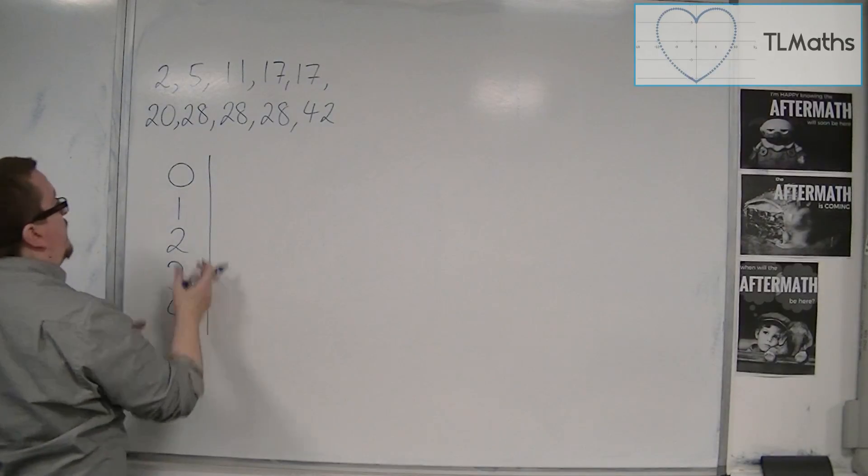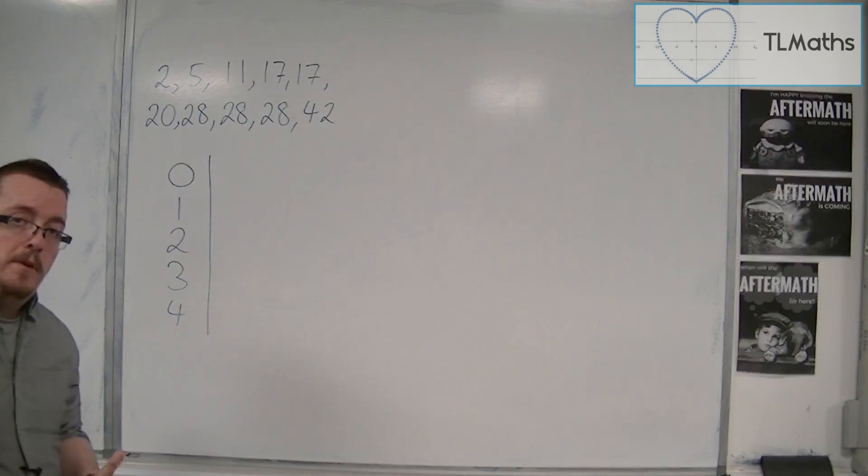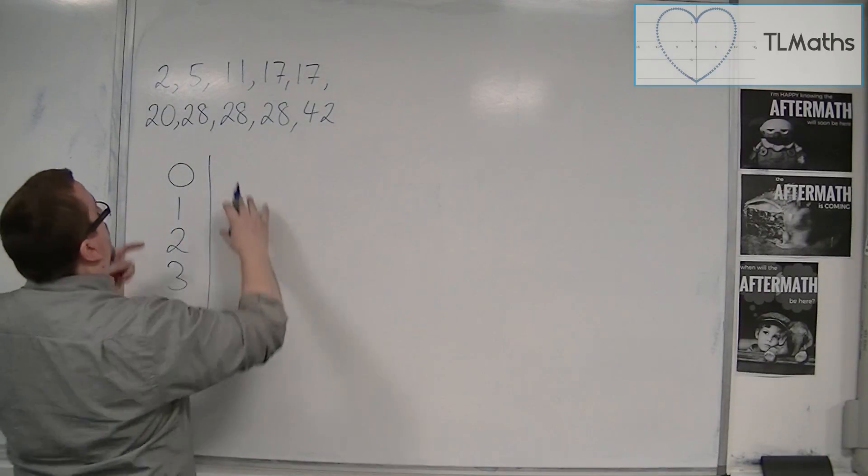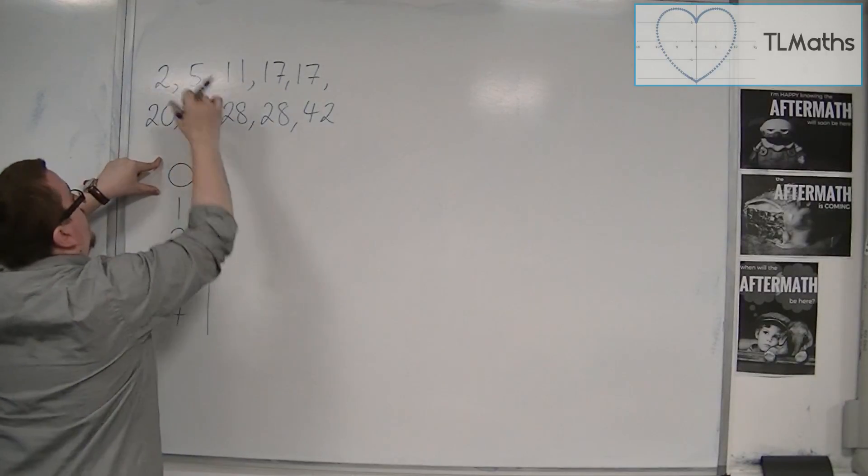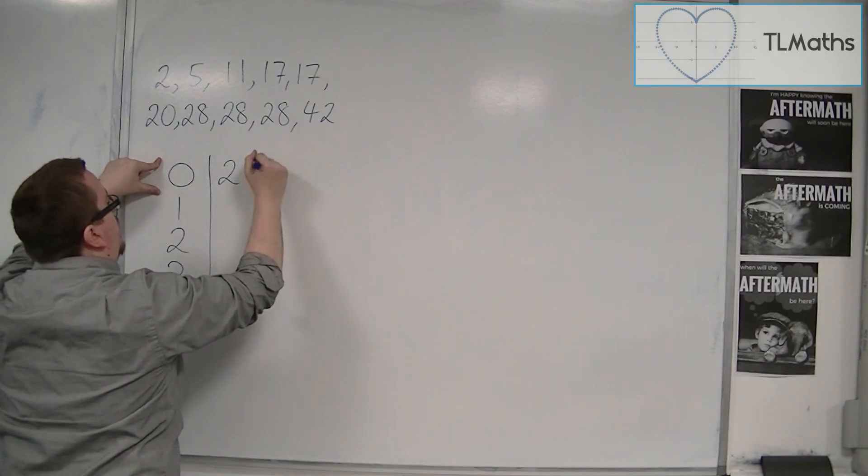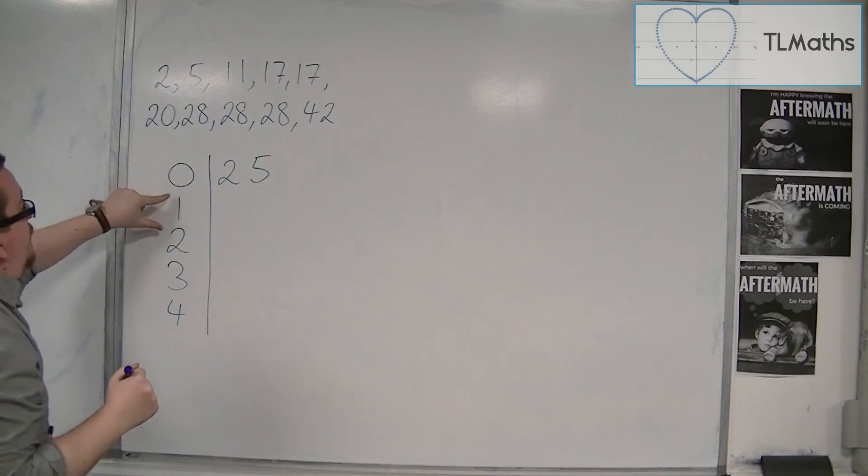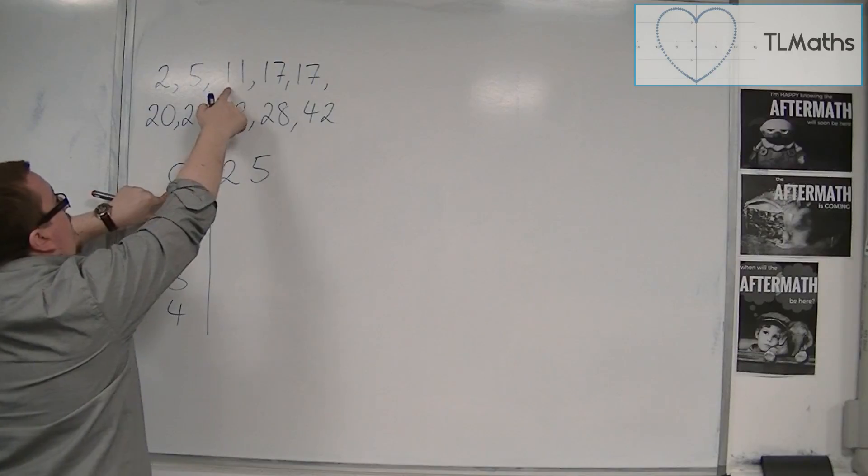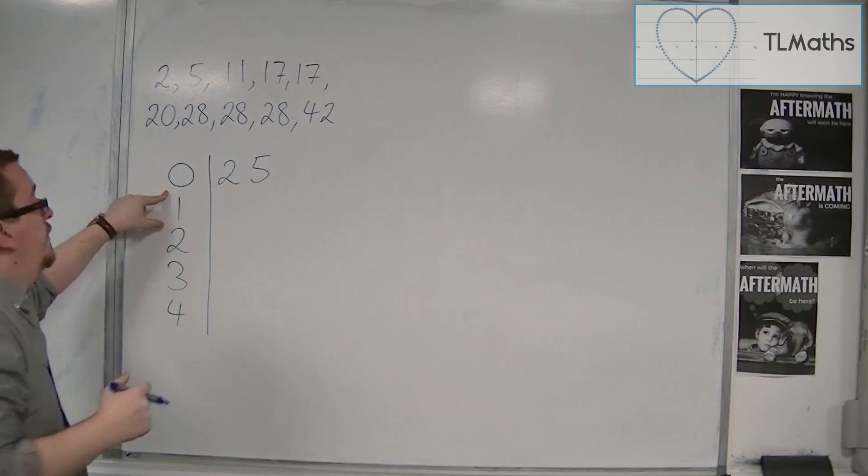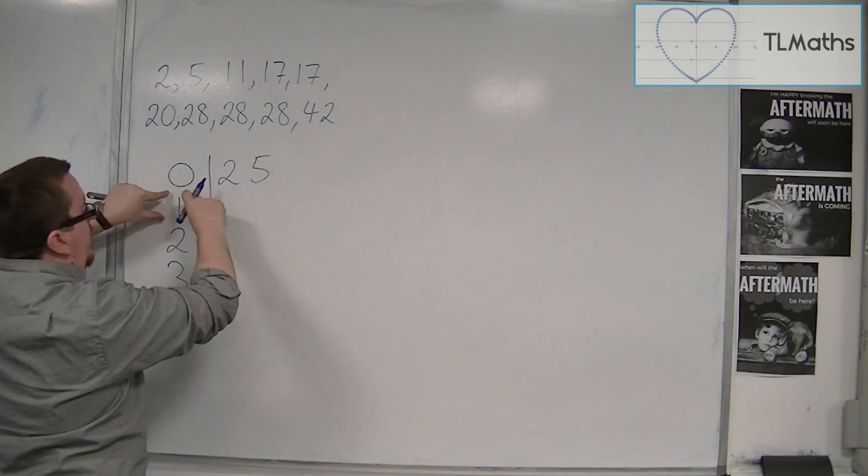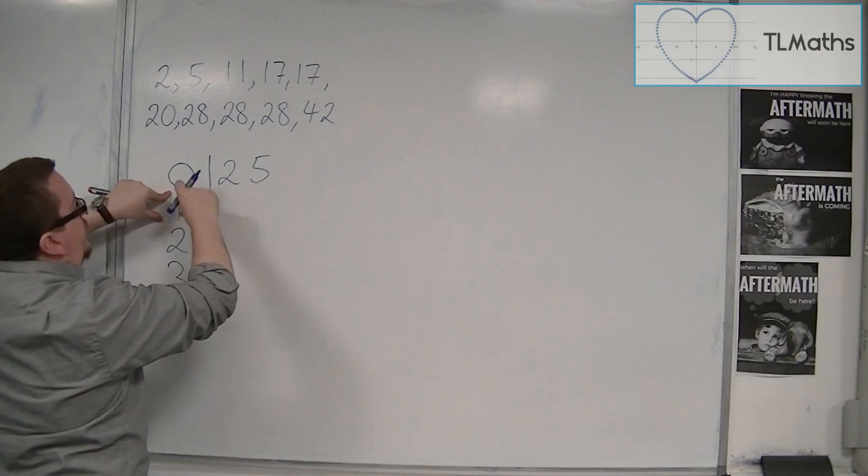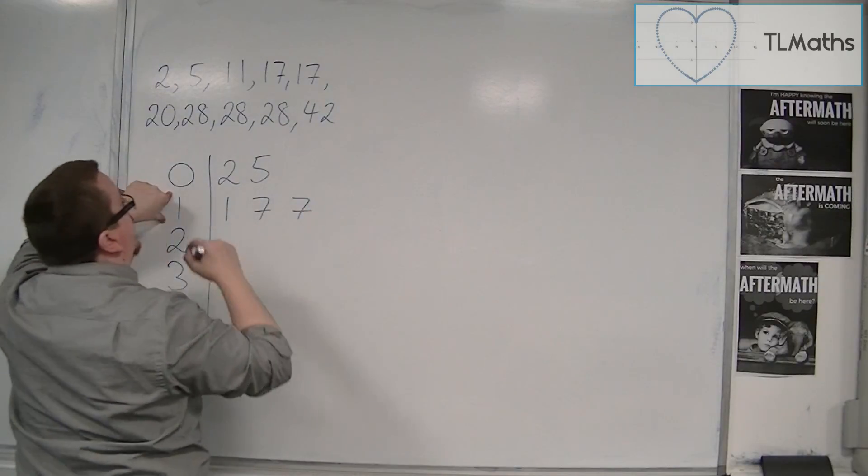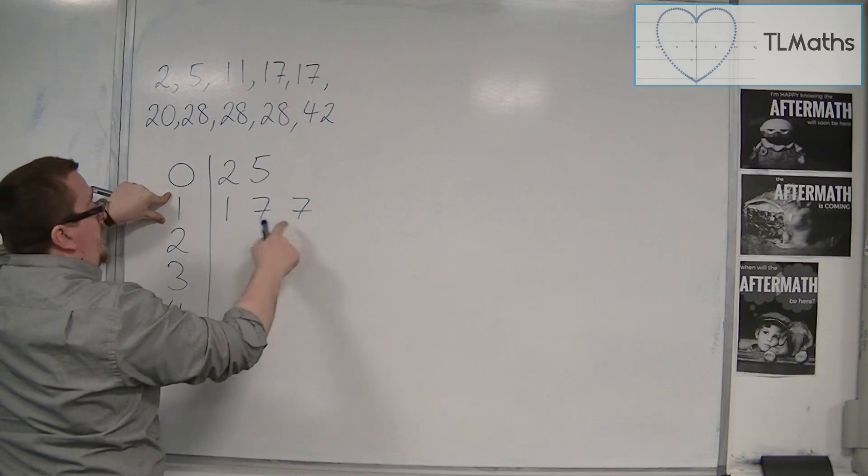And this is going to be my stem. And from this, there are going to be leaves. So for the zeros, I've got 2 and 5, and I would write them in order like that. And then for the tens, I've got 11, 17 and 17. I don't write down the tens unit, because the tens place is already there. So I just write down the 1, the 7 and the 7, for 11, 17 and 17.